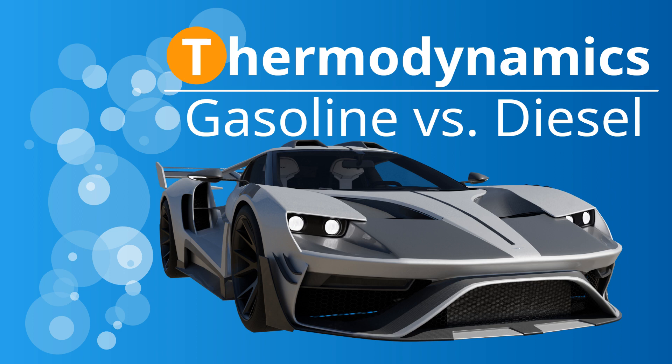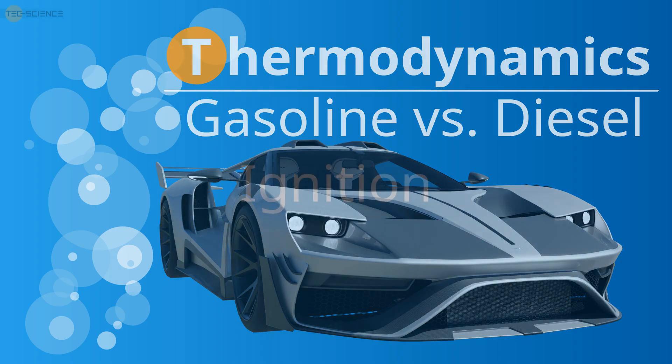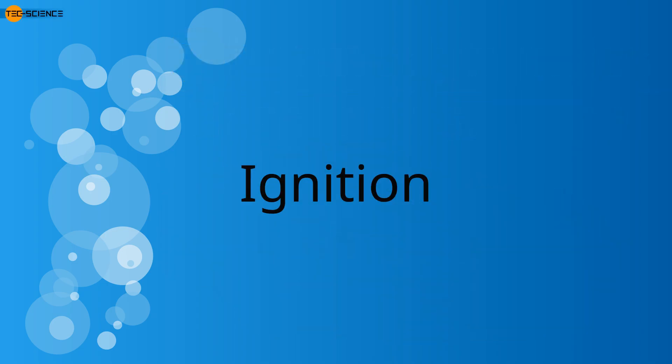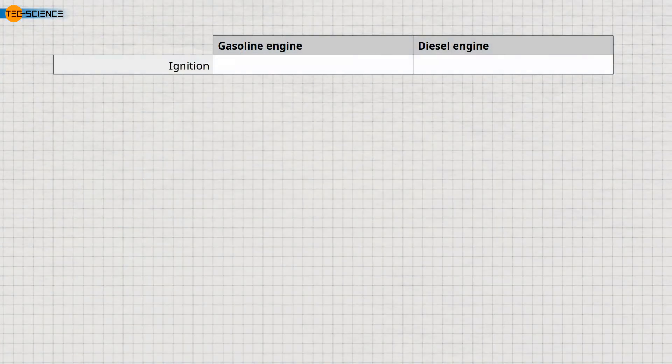In this video, we take a closer look at the key differences between a gasoline engine and a diesel engine. Unlike the gasoline engine, which runs on petrol, the diesel engine uses diesel as fuel.